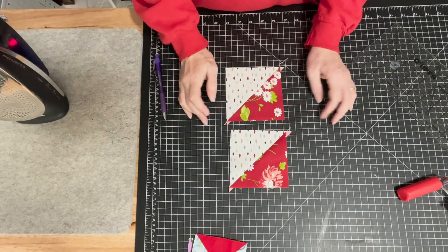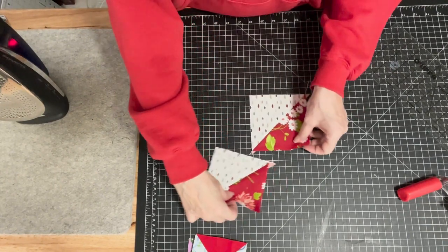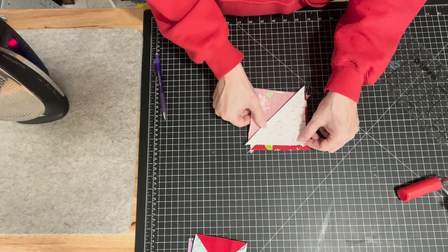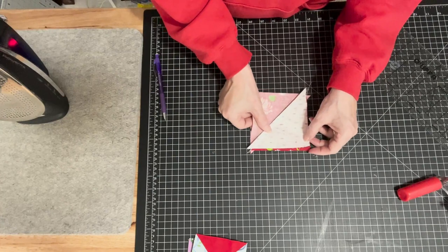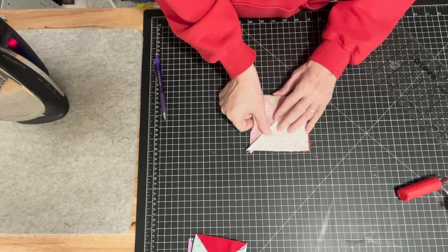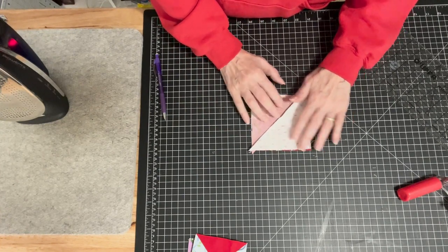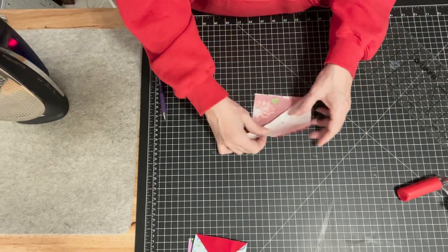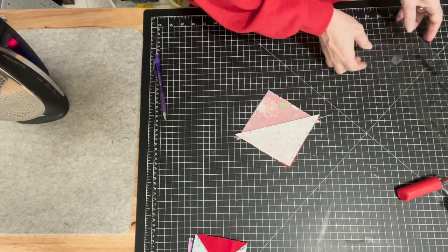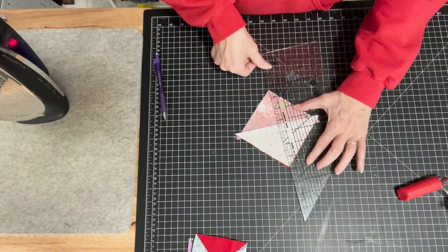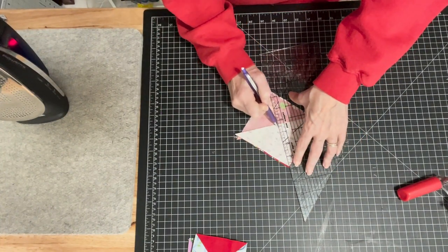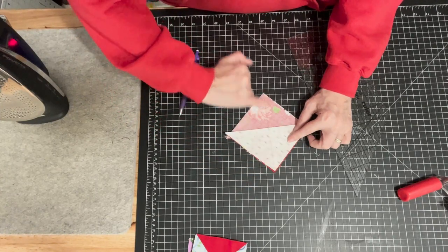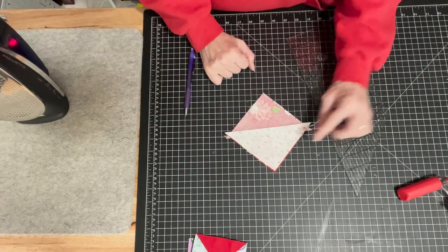I have two half square triangles now. The next thing I'm going to do is put those right on top of each other so that it goes the opposite way and my seams will nest. When I put them together, my little butterfly wings, these little dog ears that are on the end, are going to crisscross. Then I'm just going to take my ruler and draw a line right down the middle, and I'm going to do the exact same thing - sew a quarter inch on either side of that line.